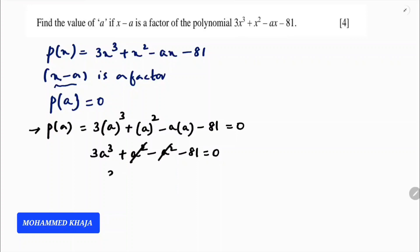Here a square and a square cancel. So 3a cube equals 81. A cube is 81 by 3, which is 3 times 27.